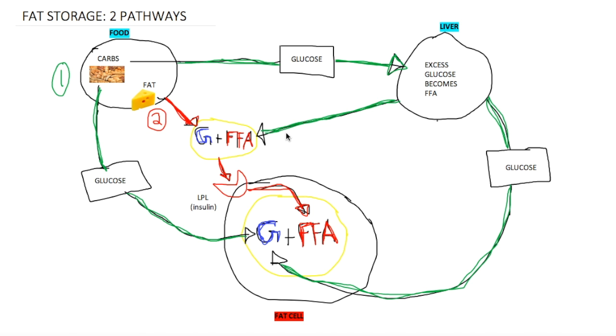Glucose also spikes insulin which activates this enzyme here. Protein also spikes insulin, but right now let's just keep it simple. Notice I didn't put protein here which I'm going to explain why in separate videos.